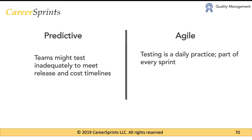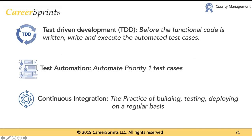Now let's look at some key agile practices that really enhance quality management. These are practices taken from the PMBOK that you can also find in many articles online. We'll discuss test-driven development, test automation, and continuous integration.